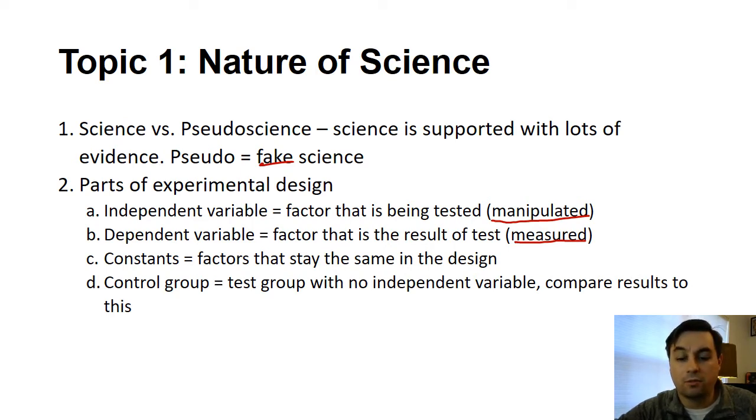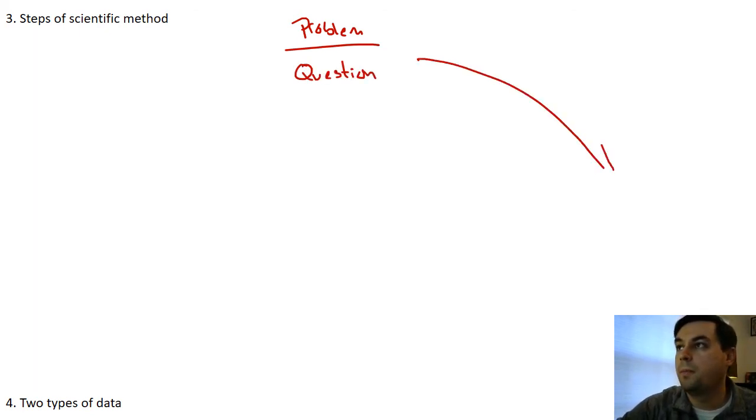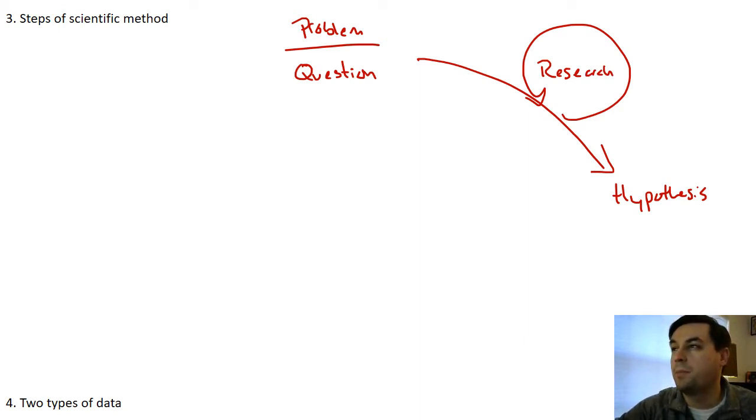Next we're going to talk about the scientific method. Generally speaking, we start with something known as a problem, but you can phrase that also as a question. And then from that we usually develop a hypothesis. I should also mention, because a lot of kids have been talking to me about it this way, there is research involved and I agree, we use research all the time.